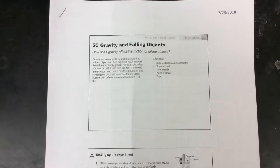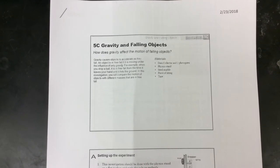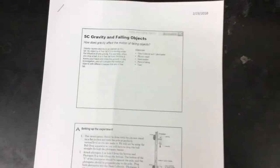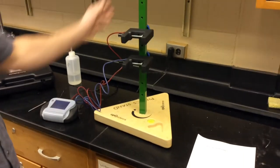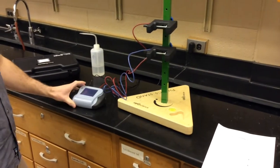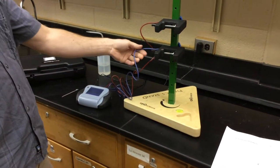This is the lab video for Lab 5C, Gravity and Falling Objects. When you come into class, you're going to need the stand, two photo gates, and the data collector.